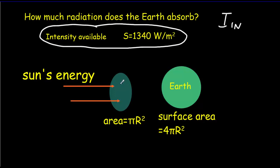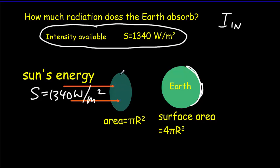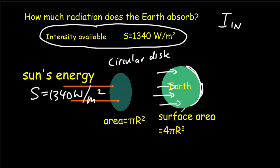There's a problem with that, because if you consider the Earth itself, part of the Earth is dark — it's nighttime there and it's not receiving any intensity at all. But there's a very easy way to simplify this. We know the intensity coming in is S, 1340 watts per meter squared. What we do is picture a circular disk, and every single ray that passes through that circular disk is going to strike the Earth — none of them miss. All of that power going through this circle is going to strike the Earth.